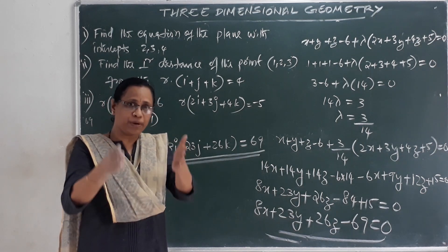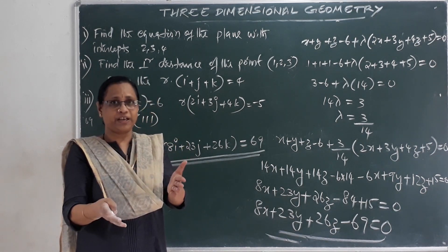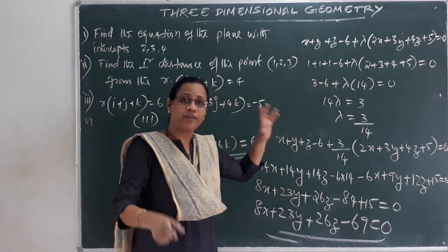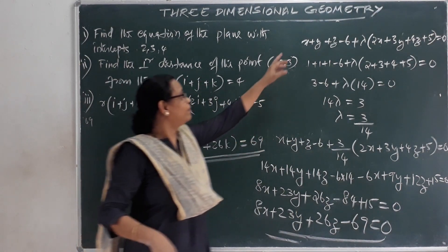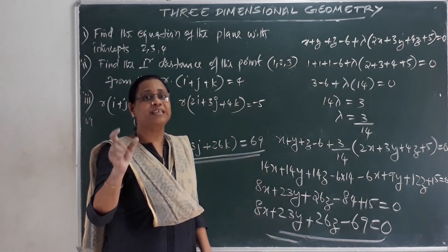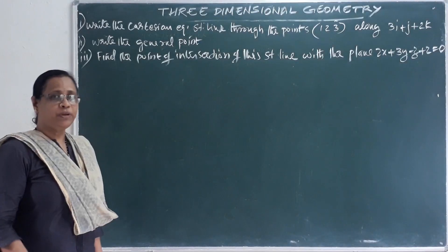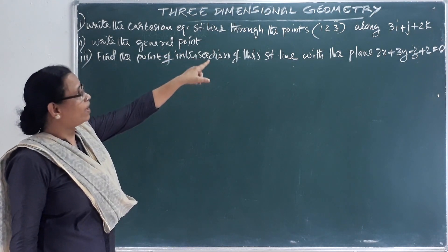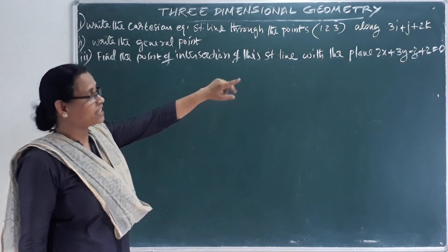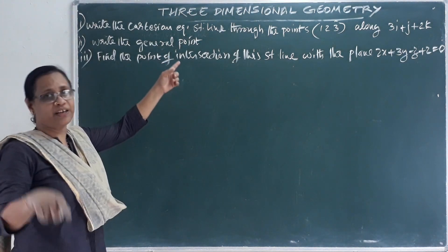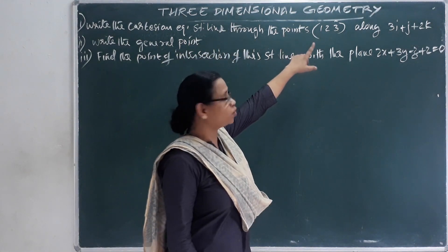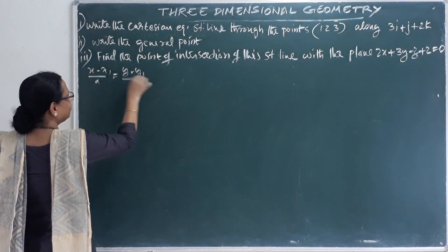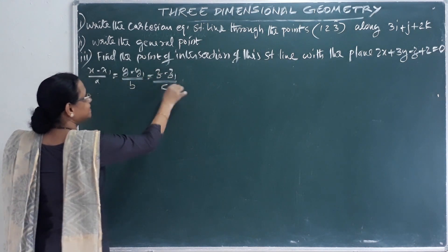If you have two parallel planes, the direction ratio is the same, so the direction ratio is parallel to the plane. The direction ratio is 1, 1, 1. Now, write the Cartesian equation of straight line through the points (1, 2, 3) along the vector 3i + j + 2k. The straight line Cartesian equation is (x − x₁)/a = (y − y₁)/b = (z − z₁)/c.